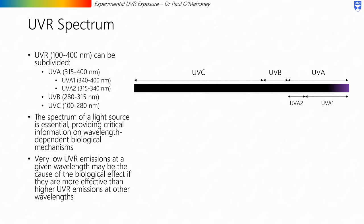Now that we have covered most of the relevant terms, we'll move on to talk about the UVR spectrum itself. UVR from 100 to 400 nanometers can be subdivided into a few different categories: UVA from 315 to 400 nanometers, which can itself be subdivided into UVA1 and UVA2; UVB from 280 to 350 nanometers; and UVC from 100 to 280 nanometers. Light sources are often referred to by their UV range, for example a UVA lamp. While this is quite convenient, it's not very specific — it only gives you an idea of the range of the output, not how the output is distributed across that range. That's why the spectrum of a light source is essential, providing critical information on wavelength-dependent biological mechanisms.